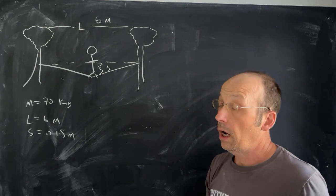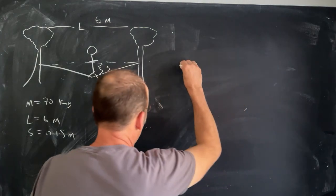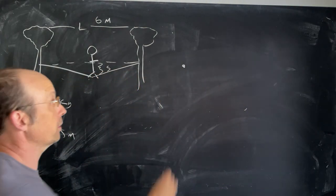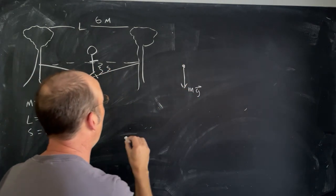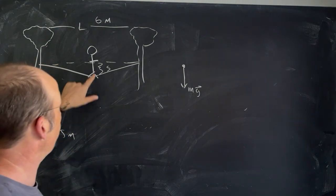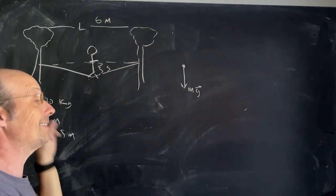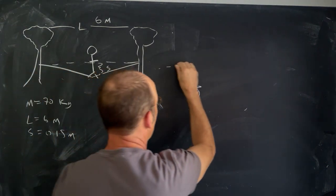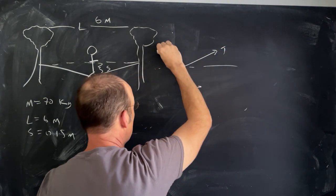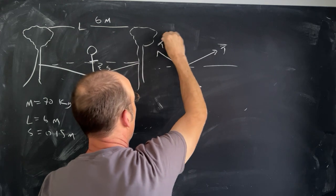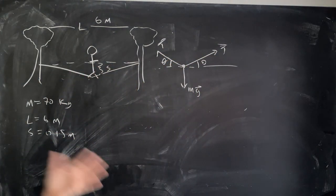Let's start with the free body diagram. I have my person — what long-range forces are acting on the person? The downward gravitational force mg. What other forces? A contact force from the string — the tension on this side and that side. There are two tension forces of the same magnitude T, and these angles are the same because the person is in the middle.